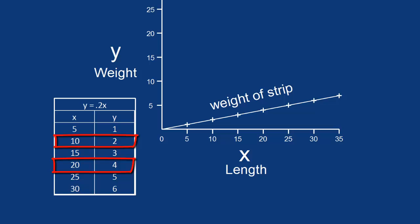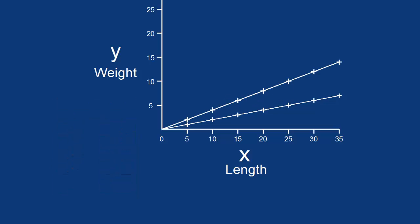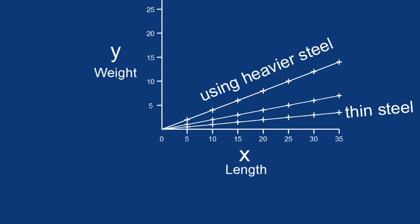Now, let me show you what would happen to this graph if we made the steel strip out of a heavier gauge metal. You see that it's still proportional, but the graph would be steeper. But it's still true that the weight would double if the length of the side were doubled. If we used very thin steel, the slope of this line would be less, but it's still a straight line. And it would still be proportional.